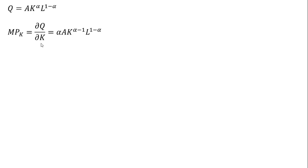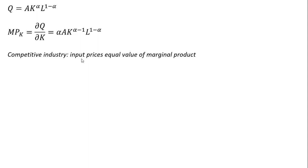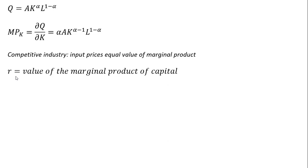Taking our production function, I'm going to first get the marginal product of capital by taking the partial derivative of Q with respect to K. We bring this alpha down in front, and then the exponent on the K term becomes alpha minus 1. In a competitive industry, input prices equal the value of the marginal product. So R is the input price for capital, and in a competitive market that equals the price of the output good times the marginal product of capital. Making a substitution for the marginal product of capital which we found in this step.